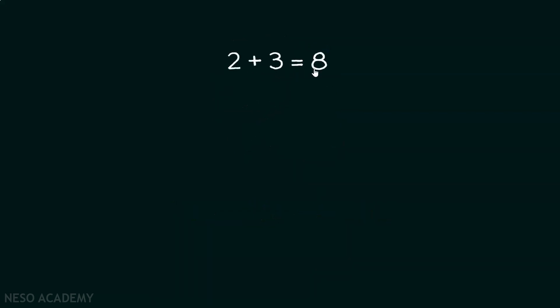Let us assume that 2 plus 3 is equal to 8, 3 plus 7 is equal to 27, 4 plus 5 is equal to 32, 5 plus 8 is equal to 60, 6 plus 7 is equal to 72.